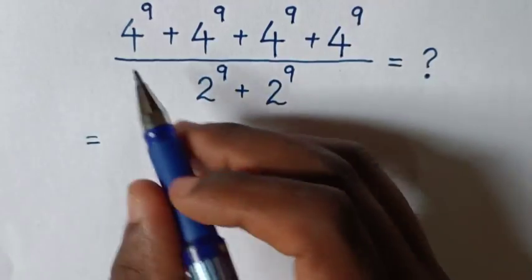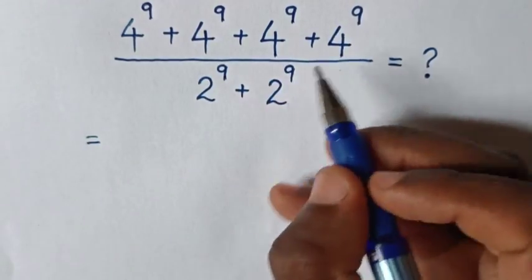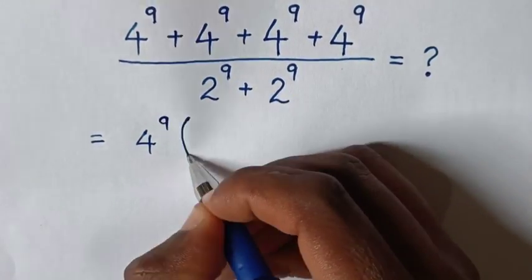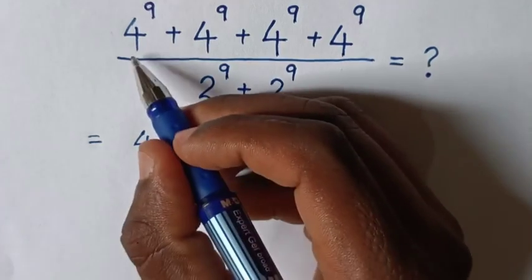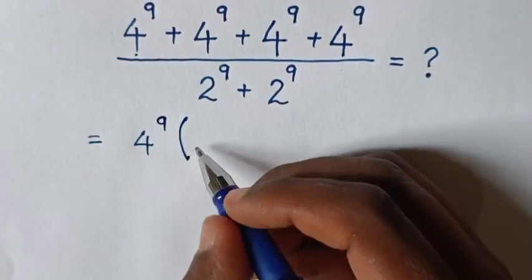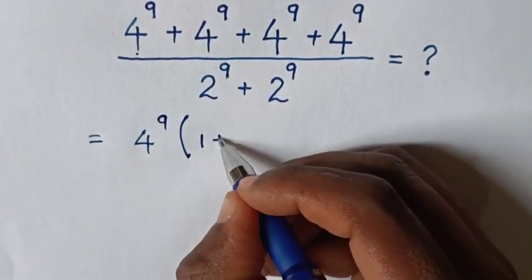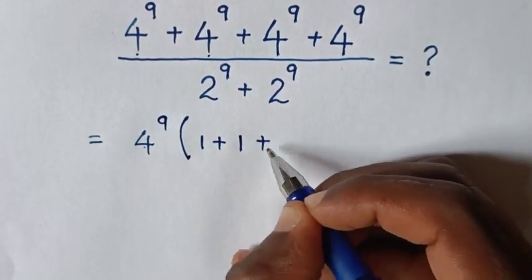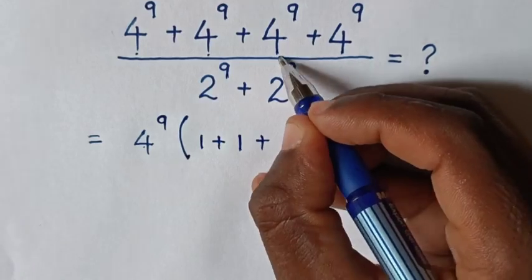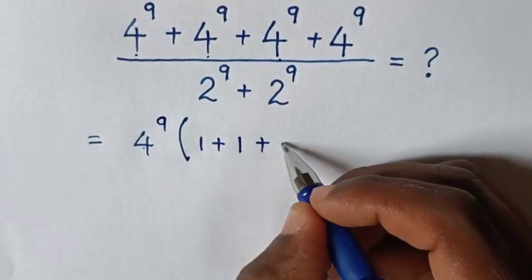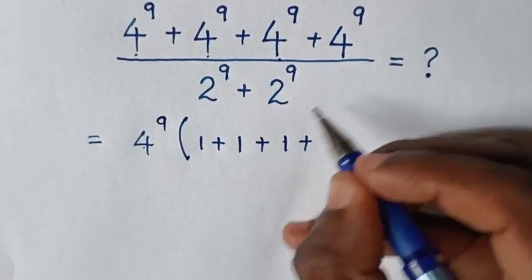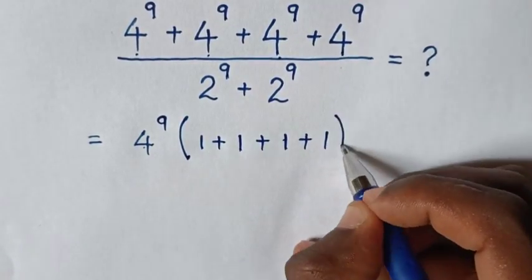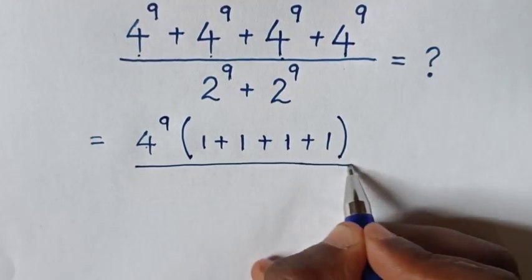Here in the numerator, 4 power 9 is common. So take 4 power 9 out of the bracket. Each term divided gives 1 plus 1 plus 1 plus 1. Bracket over.